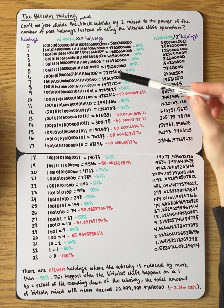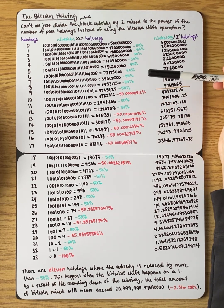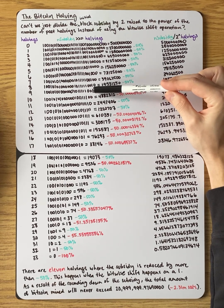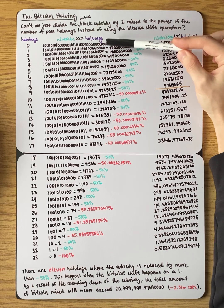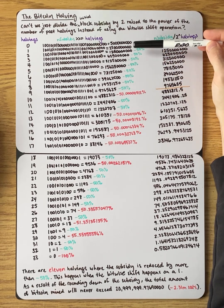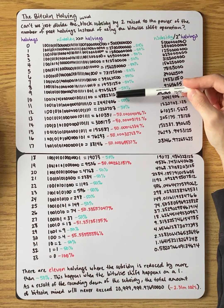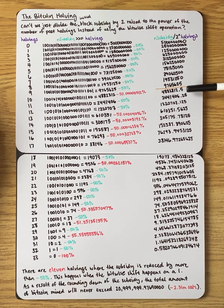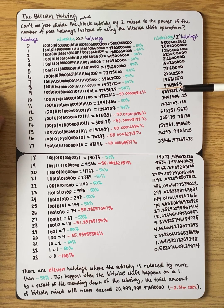Something interesting happens at the 10th halving. At the 10th halving, for the first time you remove a one from the binary number. Because you're removing a one, you're not getting a perfectly even halving of the subsidy. Every time before that, when you removed a zero, you got a perfect 50 percent halving. But now that we're removing a one, we get this effect where it looks like we're rounding down. If we weren't doing any rounding and were just taking the full divide-by-two operation, we would get this number of satoshis — and it would have a decimal, which obviously is not possible in Bitcoin.